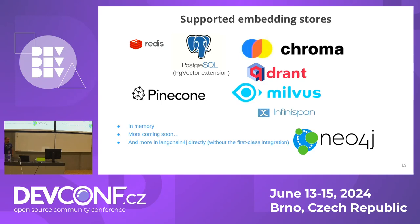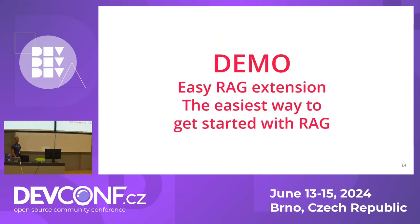We support multiple types of embedding stores — again, this is not an exhaustive list. Among the most popular are Redis, Postgres with the pgvector extension, Infinispan, and Chroma. More vector databases are appearing every day — this is a highly active area. You can also use an in-memory embedding store, which I'll use in the demos. It's not very useful in the real world, but fine for a demo.